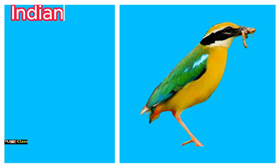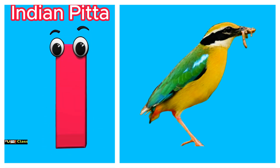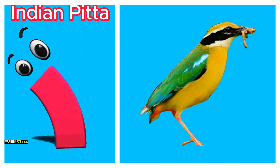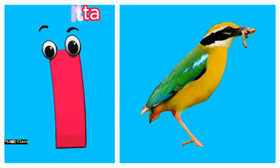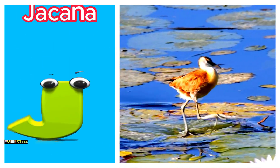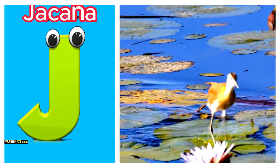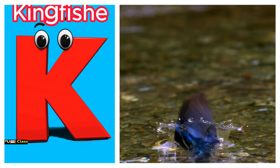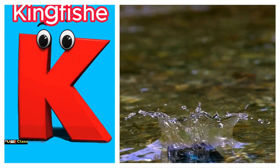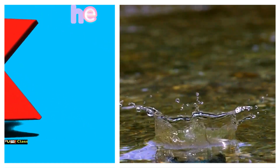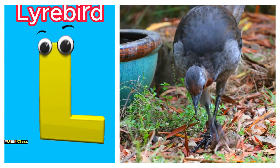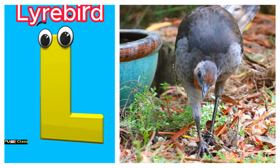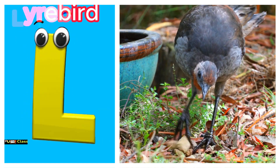I is for Indian pitta. Eh, eh, Indian pitta. J is for jacana. Juh, juh, jacana. K is for kingfisher. Kuh, kuh, kingfisher. L is for lyrebird. Luh, luh, lyrebird.